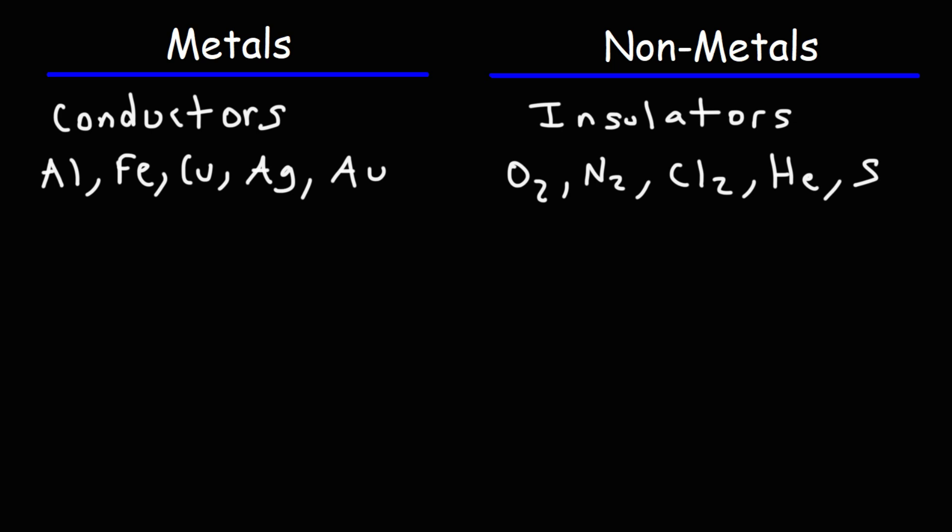Metals tend to be very shiny. They have a metallic luster. Non-metals are usually dull. They don't have that same metallic luster that metals do. Most metals tend to be hard. They don't break easily. Non-metals, the majority of them, are usually brittle in their solid form. There are some metals that are soft, particularly the alkali metals, like sodium and potassium. You can cut them with a knife. But the majority of metals, they tend to be hard.